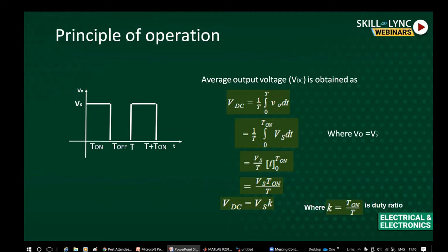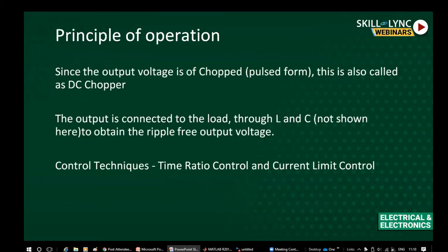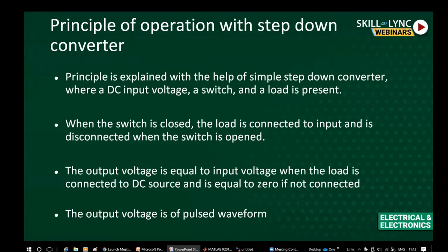The output voltage is of pulse form, but this cannot be used in any application directly, so L and C components are used as a filter to filter out ripple. There are two control techniques for operating the switch: one is time ratio control and another is current limit control. Time ratio control, also called pulse width modulation control, keeps the switching frequency constant while changing either the on period or the off period.